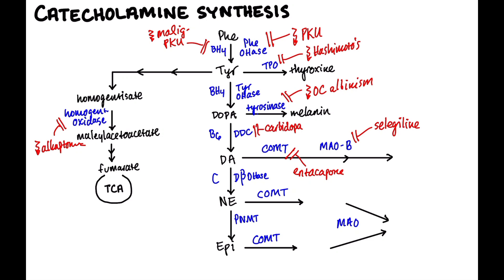What about norepinephrine and epinephrine? Epinephrine gets broken down into metanephrine, and norepinephrine gets broken down into normetanephrine. Then MAO breaks these down further into vanillylmandelic acid (VMA). In a patient with a pheochromocytoma who is secreting large amounts of norepinephrine and epinephrine, we don't measure catecholamines in the blood — we measure the breakdown products in the urine. Checking for VMA, metanephrines, and normetanephrines in the urine is a great way to detect excess epinephrine or norepinephrine.